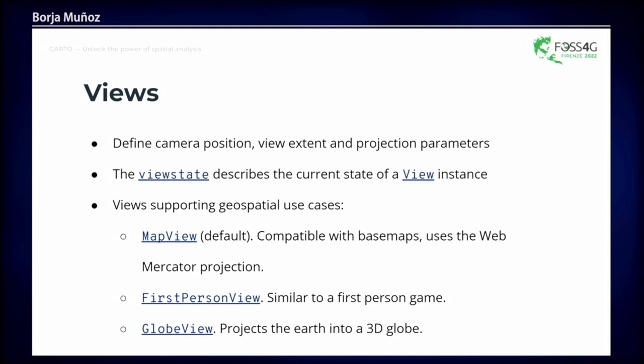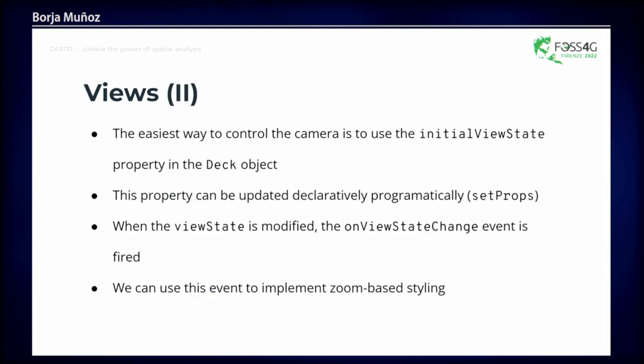The views define the camera position, the view stand, and the projection parameters. The three main views for spatial data visualization are the map view, the globe view, and the first person view. By default you'll use the map view, which uses the Web Mercator projection. The view state describes parameters like longitude, latitude, and 3D projection controls like pitch and bearing. The easiest way to control the camera is using the initial view state property, and it's important to listen to the view state change event to control things like zoom-based styling.